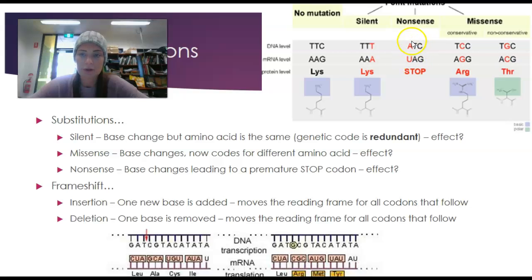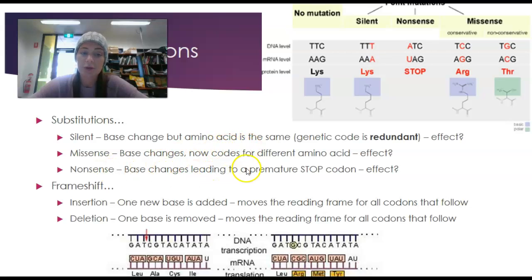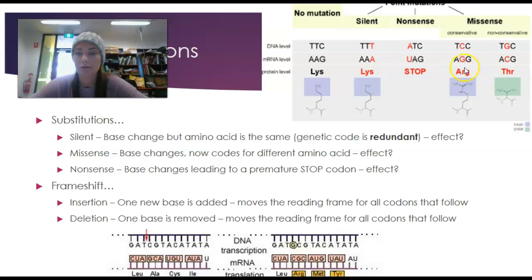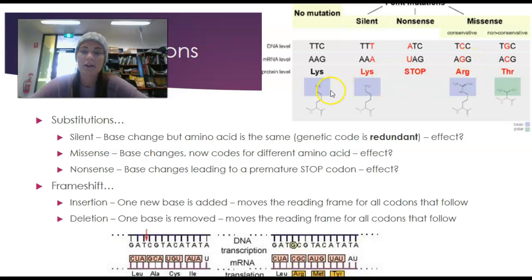A nonsense mutation is where a premature stop codon comes into play. Instead of TTC, we now have ATC, giving us mRNA codon UAG, which if we look that up in the universal code, we get a stop. A missense mutation is where a different amino acid is added. For example, TCC transcribing to AGG gives us arginine instead of lysine.